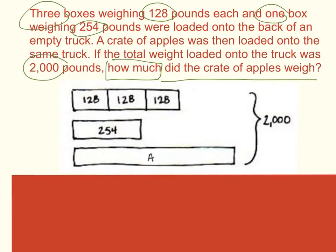Here would be my apples on the tape diagram. The reason I knew my apples would be the most weight was because I quickly rounded 128 to 100, added those together to get 300, then rounded 254 to 300, and 300 plus 300 is 600. I can look at my total weight and know that 600 is way less than 2,000, so the majority of my weight is going to come from apples.